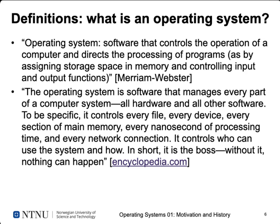Encyclopedia.com has a more extensive definition: an operating system is the software that manages every part of a computer system — all hardware and all other software. It controls every file, every device, every section of main memory, every nanosecond of processing time, and every network connection. It controls who can use the system and how. In short, it is the boss — without it, nothing can happen.